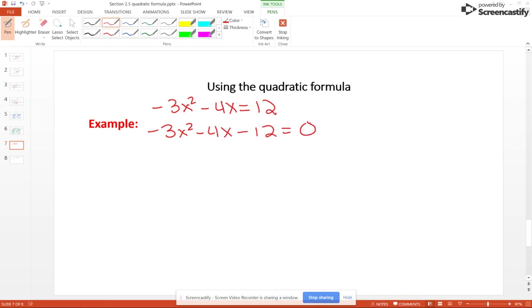Now my leading coefficient is a negative. I don't like that. I don't like using a negative for my leading coefficient in the quadratic formula. So what I'm going to do is I'm going to divide each and every one of these terms by negative 1, and it does have to be each and every one of those terms to keep everything all balanced. And we get 3x squared plus 4x plus 12 equals 0. You do not have to do that step, but I find it safe for people to get rid of that leading coefficient of a negative 3 instead of a positive 3.